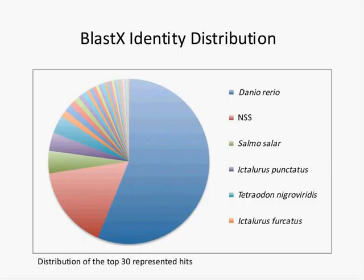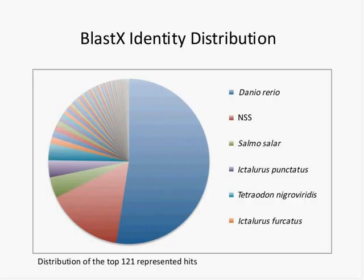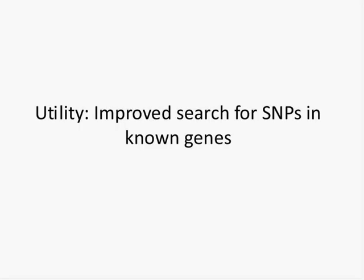Where did our BLAST hits land? Looking at the top 30 represented hits in this pie chart, the majority came from Danio rerio, which we would expect — it's the most closely related organism to Astyanax mexicanus that has a sequenced genome. Other hits included an array of teleost fish including salmon, catfish, and fugu. The pattern doesn't change much if you bump up to the top 120 represented hits from our BLAST X.